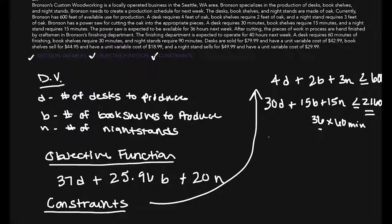a desk requires 60 minutes, 60D, plus 30B for the bookshelf finishing minutes. And then, nightstands require 90 minutes, 90N. Also, less than or equal to 40 hours, multiply that by 60 minutes, is going to give us 2,400 available minutes of finishing.